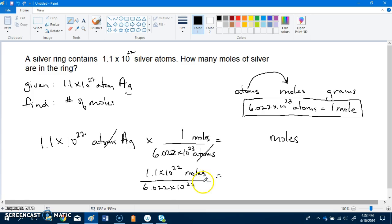And then we're going to divide that. And this might be where you're having the problem. You did divide 1.1 divided by 6.022. So you do that first. 1.1 divided by 6.022 gives you 0.183.